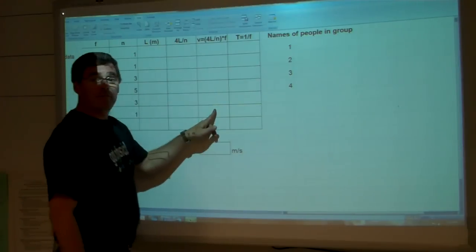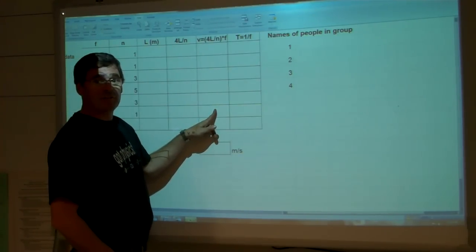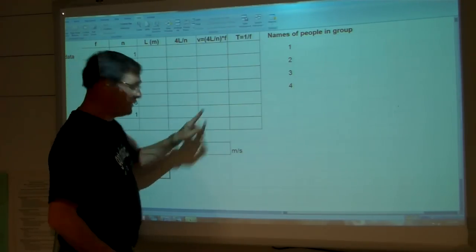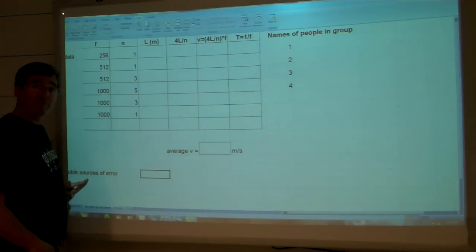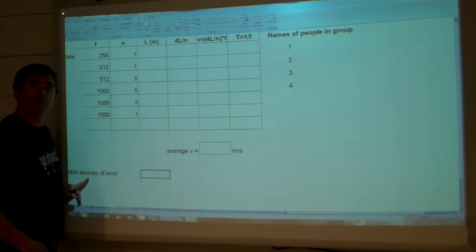Since you'll notice the values of the velocity are different, there must be some sources of error causing the variation in your values for v. So over here, please state what you think could be possible sources of this variation, in other words, possible sources of error.